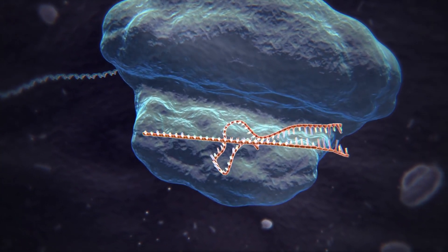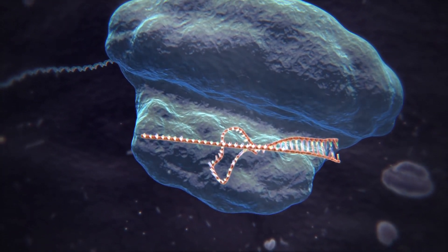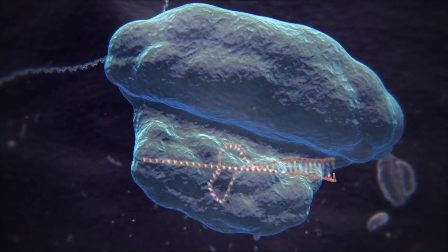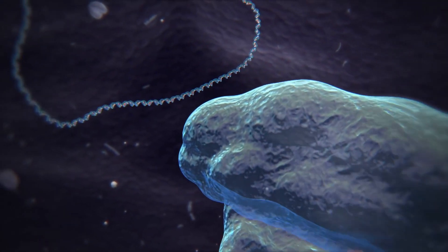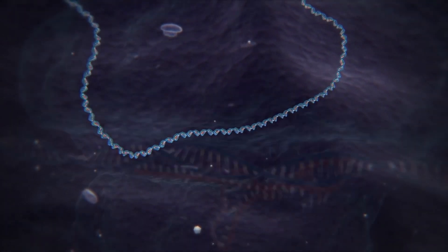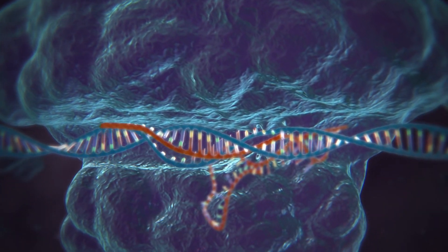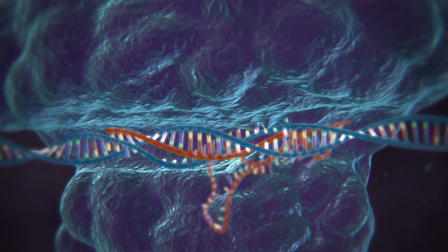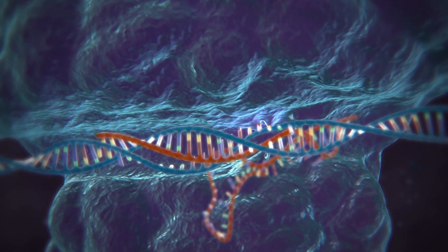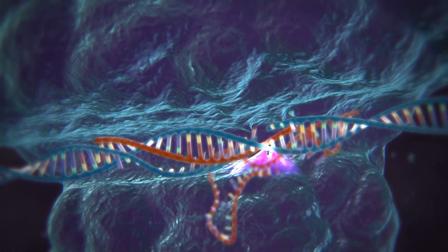These two RNAs form a complex with a protein called Cas9. Cas9 is a nuclease, a type of enzyme that can cut DNA. When the matching sequence, known as a guide RNA, finds its target within the viral genome, the Cas9 cuts the target DNA, disabling the virus.